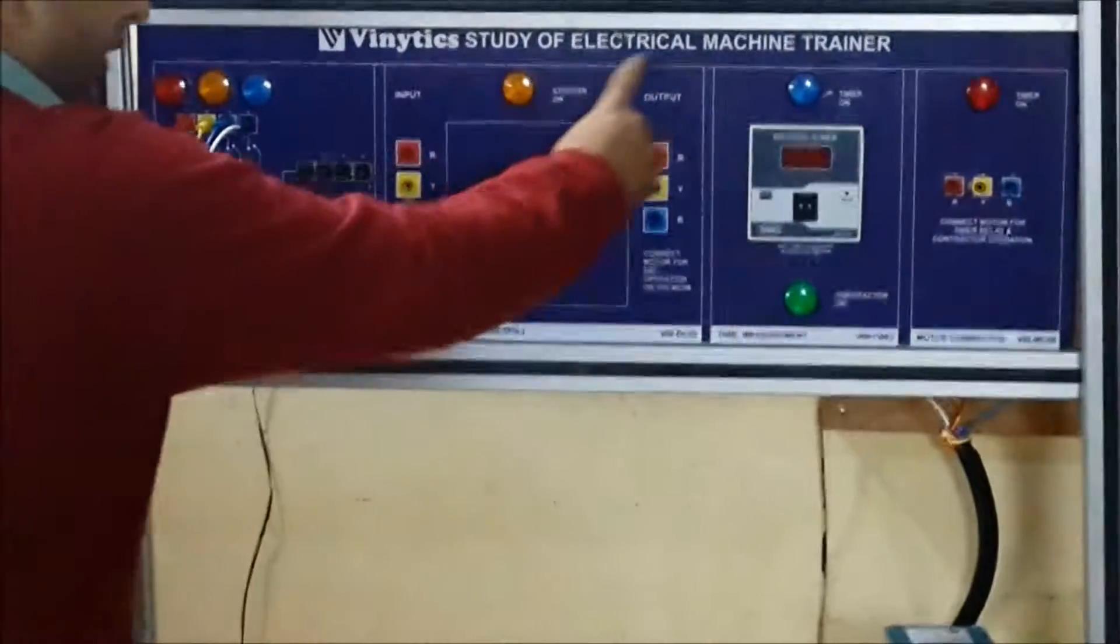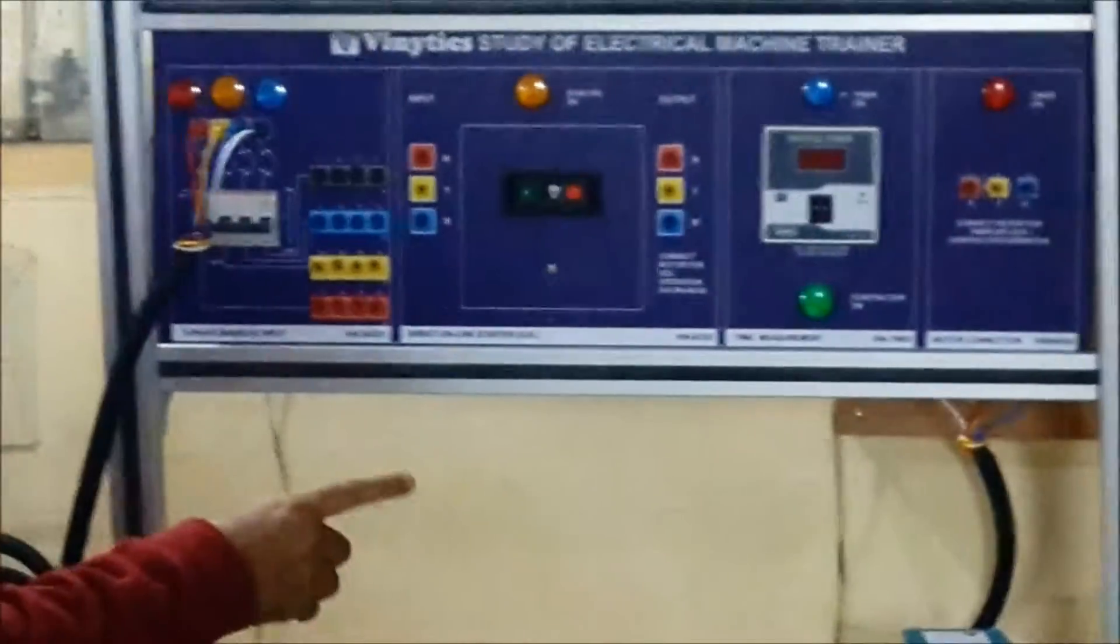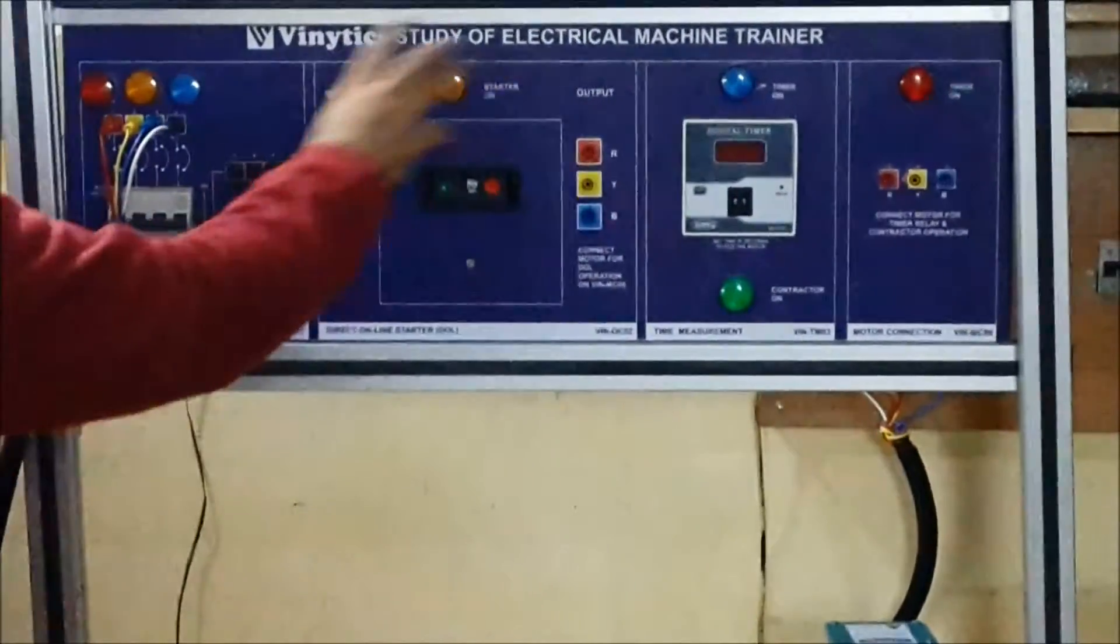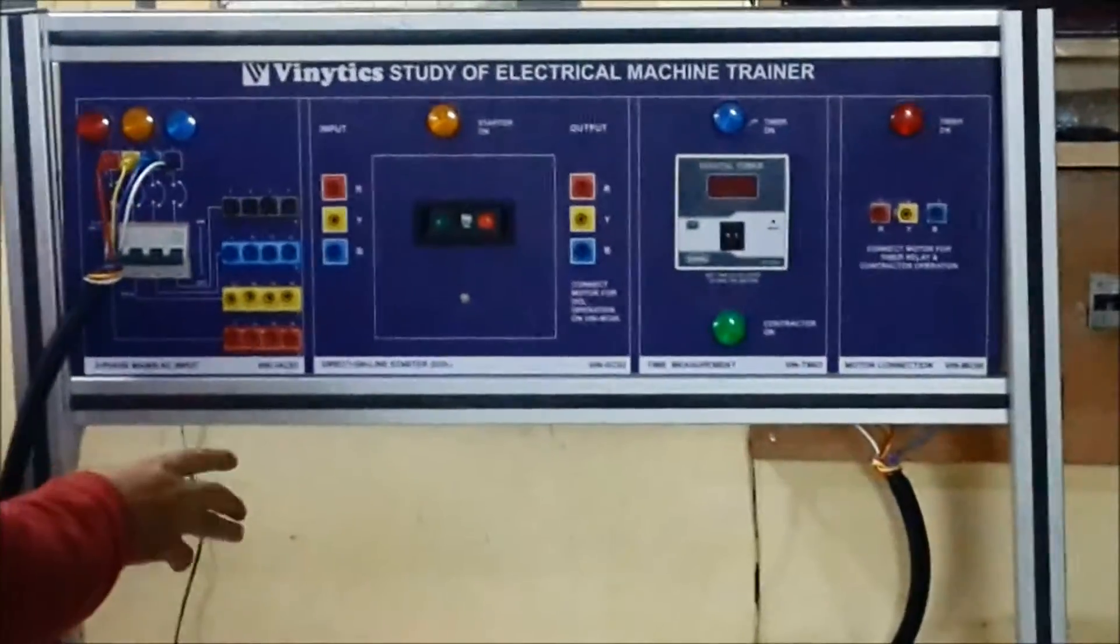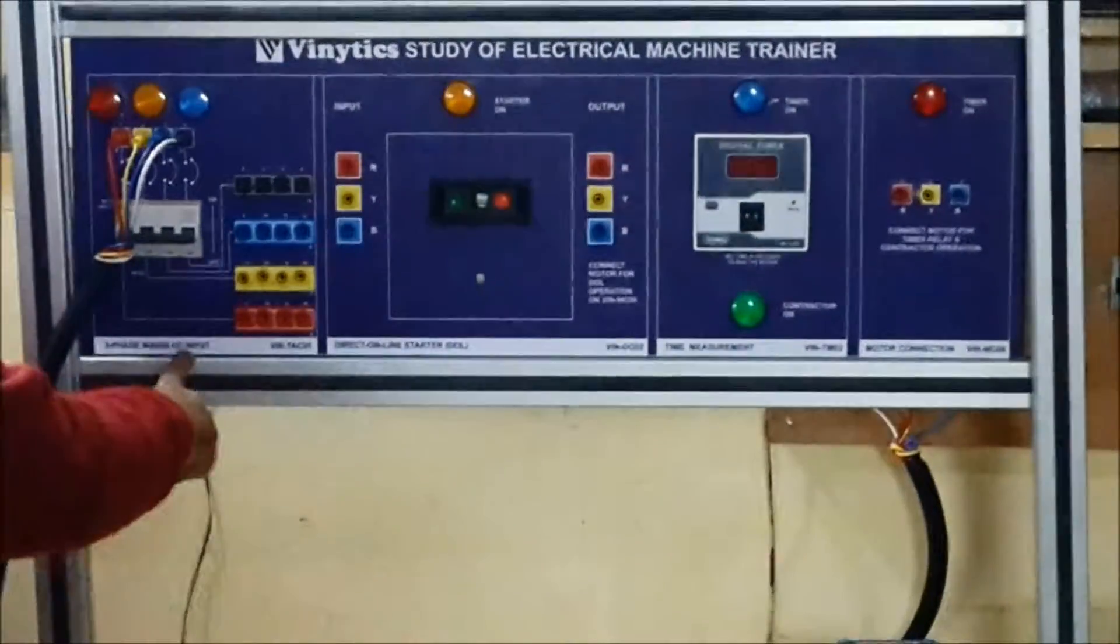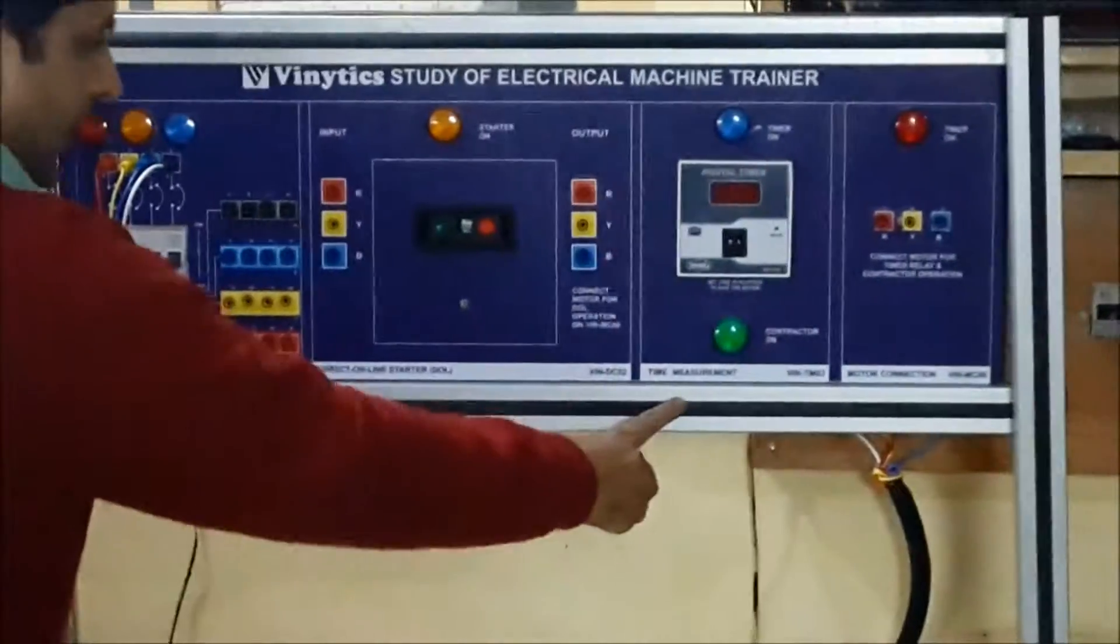This is the study of an electrical machine trainer. As you can see, this is the aluminium channel base with a screwless panel. The panel is divided into four different sections: mains input, DOL starter, time measurement,